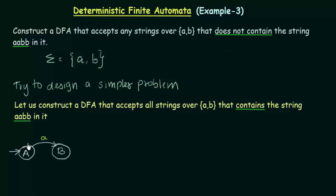What happens when state A gets input B? If A gets input B, I let it stay in A itself. Because B should not be my starting letter — it should be A. So if it gets A, it proceeds to the next state, but if it gets B, it stays in A itself.